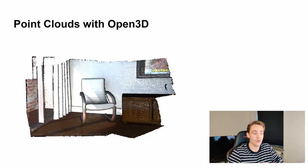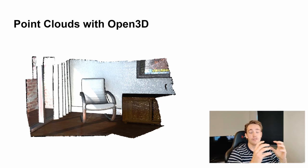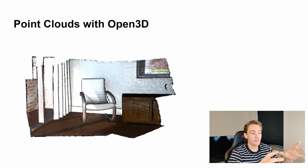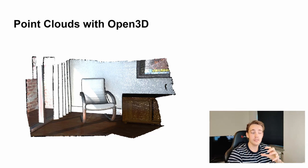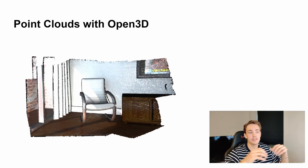Here we can see an example point cloud provided by Open3D. This is a reconstructed scene — it could come from a color image plus depth information from a depth camera. We combine that into a point cloud, and then we can move it around to see the 3D structures in our environment, which can be used to reconstruct whole rooms and do mapping and segmentation.